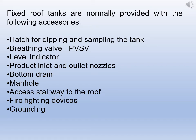Fixed roof tanks are normally provided with the following accessories. One is a hatch for dipping and sampling the tank at the top, where you can lower a rope and a sampling vessel or manual level measuring instrument. Another very important equipment is the pressure vacuum safety valve, which we will discuss in detail later. A level indicator is provided to see the level outside the tank accurately. Product inlet and outlet nozzles are also provided.